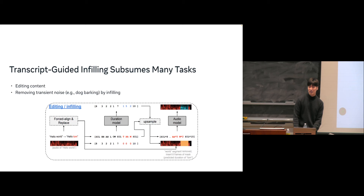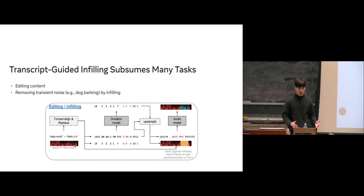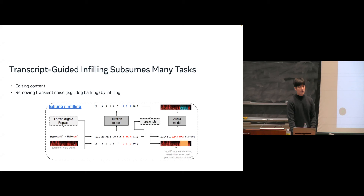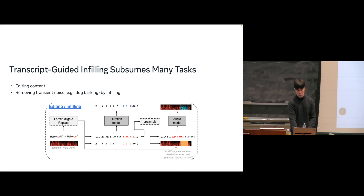This task can substitute many tasks of interest. For speech editing or denoising: say we have audio of 'hello world' and want to change it to 'hello Tom' — we find where the word to be replaced corresponds, mask it, ignore its duration, force-align the replacement, and predict the new segment. The model generates the new word in the voice and style of the surrounding context, allowing editing with different pronunciations each time.